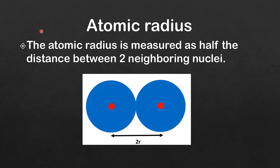We'll start by looking at how atomic radius is measured. The atomic radius is measured as half the distance between two neighboring nuclei. Here we have two atoms and two neighboring nuclei, shown as red circles, and the atomic radius is measured as half the distance between them.